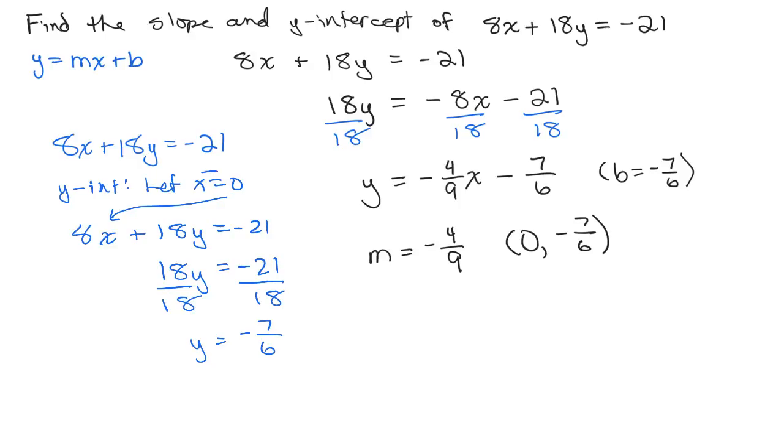So keep in mind, when x was 0, y was negative 7/6. So that means the y-intercept was (0, -7/6). Of course, I see that over here since I solved for y and put it in slope-intercept form.